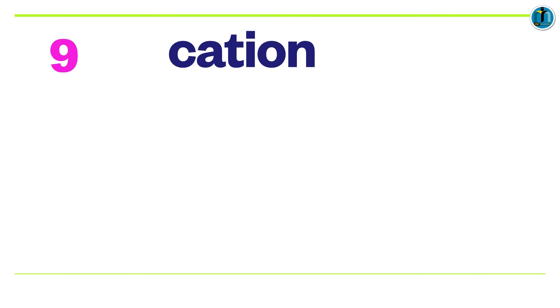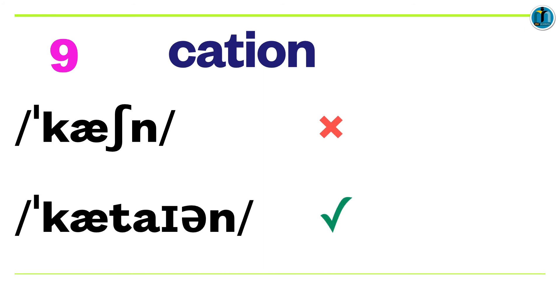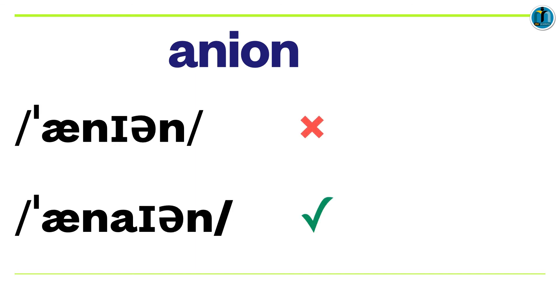Number nine: C-A-T-I-O-N. It's not cation, it's cation. This is a word to do with chemistry and it must be reminding you of its opposite: A-N-I-O-N. This is not anion, it's anion.